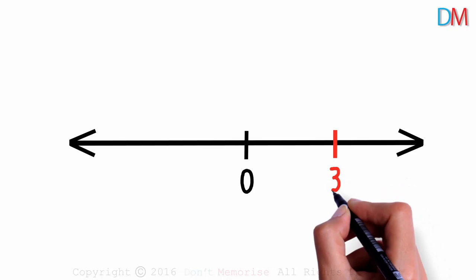It's easy to plot a real number on a number line, a real number line. For instance, the number 3 can be plotted here. The number negative 4.5 can be plotted here.